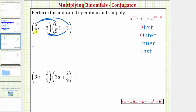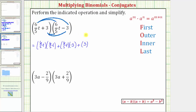Now let's write out each product. The first product is six-fifths t times six-fifths t. Then we have plus six-fifths t times negative three. Then distributing the positive three, we have plus three times six-fifths t, plus three times negative three.